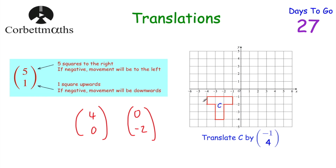Let's have a look at our first question. Because you haven't got the grid drawn for you, I'll get you to think about how you would translate the shape, and then I recommend you print the practice questions off at the end and try those. Here we've got a shape called C and we've been asked to translate C by the vector (-1, 4). Think about how that's going to translate this shape. Because it's (-1, 4), we're going to move it one square to the left and four squares up.